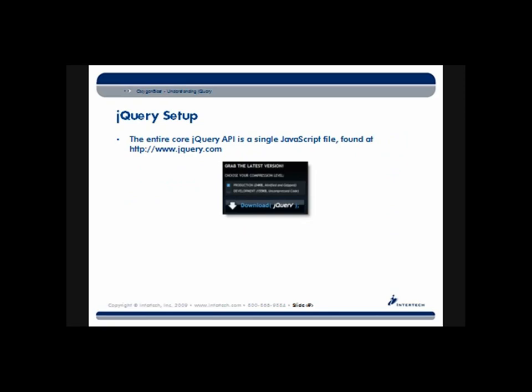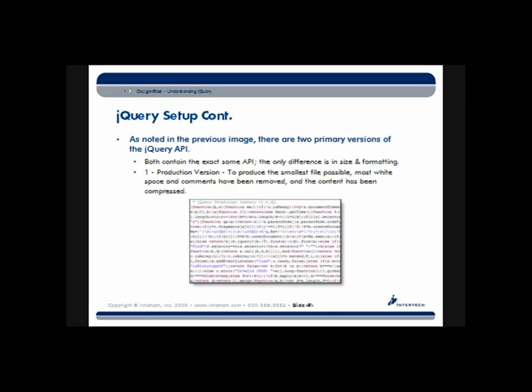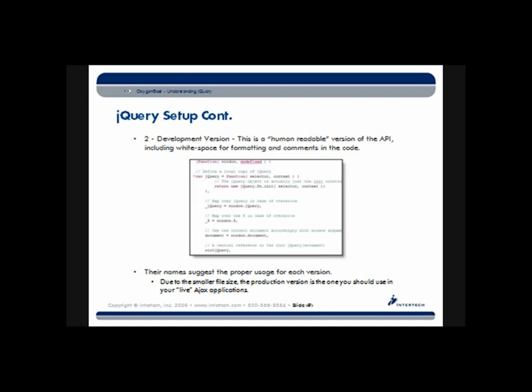Now let's talk about setting everything up. You go to the jQuery website, jquery.com, and you'll see a link that says Grab the Latest Version. They give you two options: a production version and a development version. The production version is the smallest file possible — both versions have the exact same API with no functionality difference. The production version has comments removed, very small identifiers, and compressed whitespace, with the goal of the smallest download possible. The development version is more human-readable, with formatted code, comments, and readable identifiers — useful if you want to know what's going on under the covers.